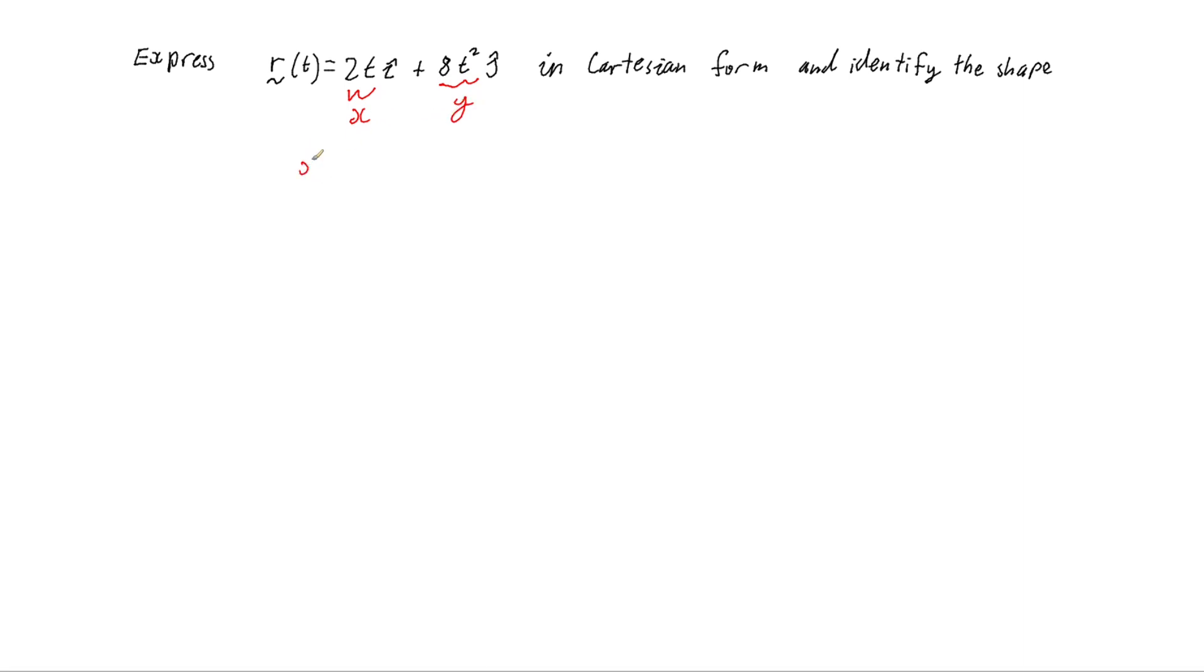So that means that I've got x = 2t and y = 8t². And that's the first step that we need to go through: identify what's the x component and what's the y component so that now I have it in parametric form and I can do what's required to get it into Cartesian form.